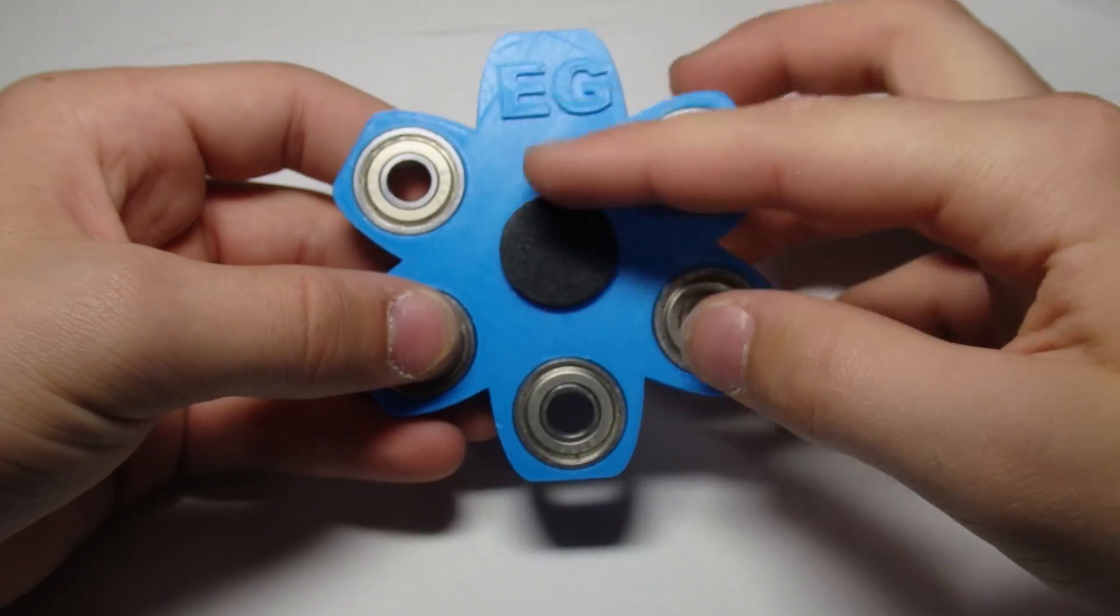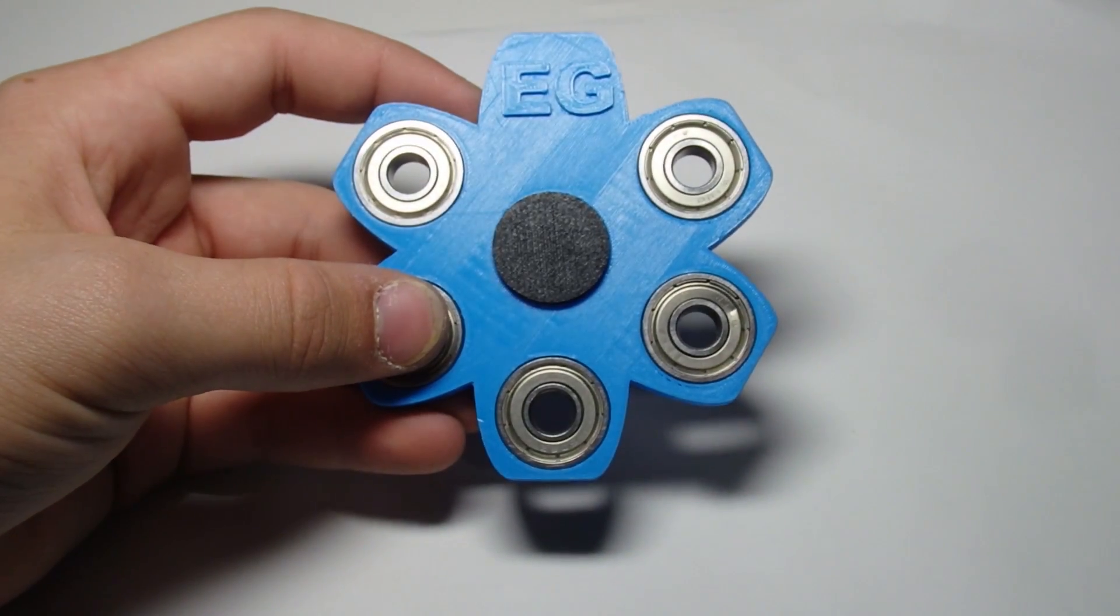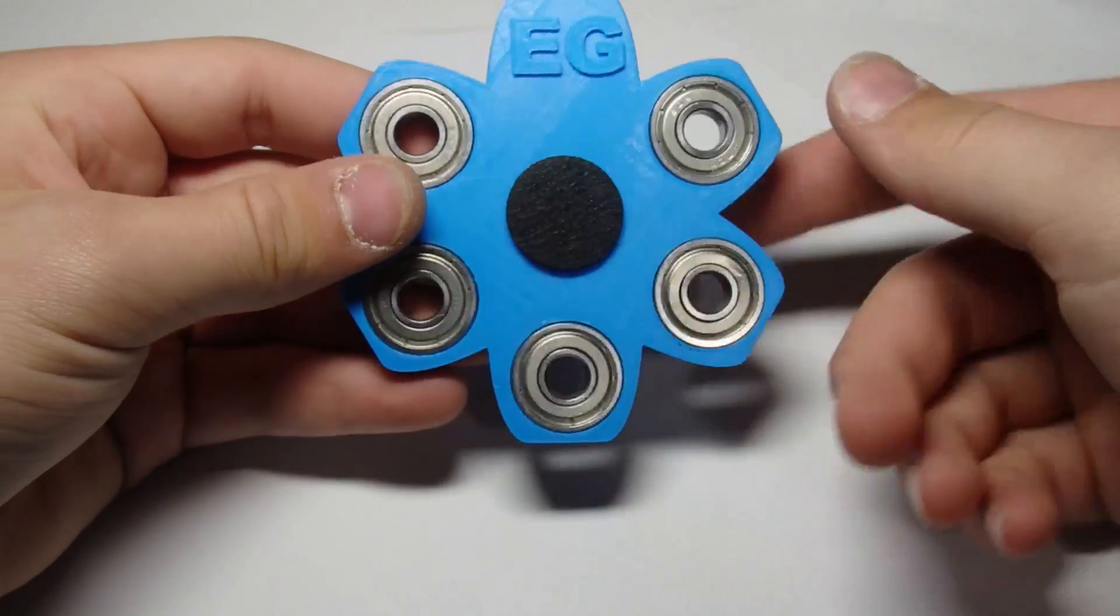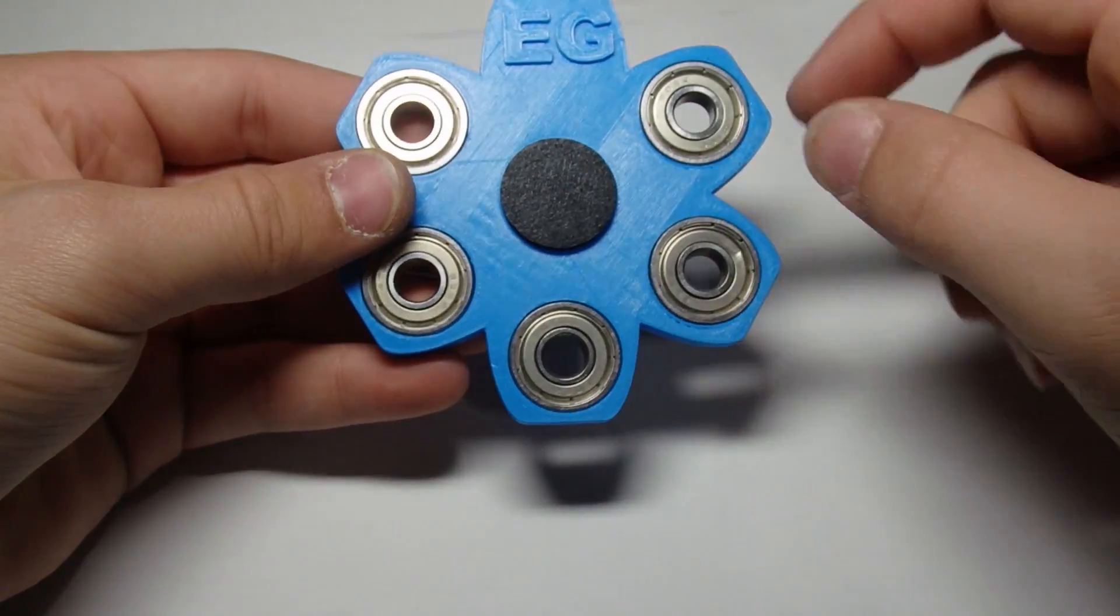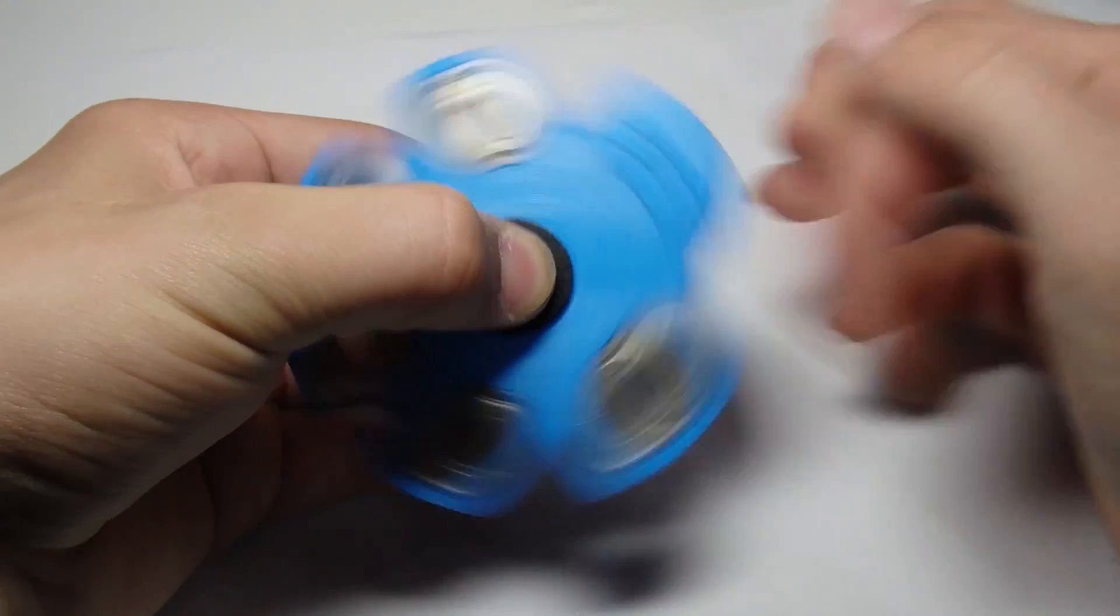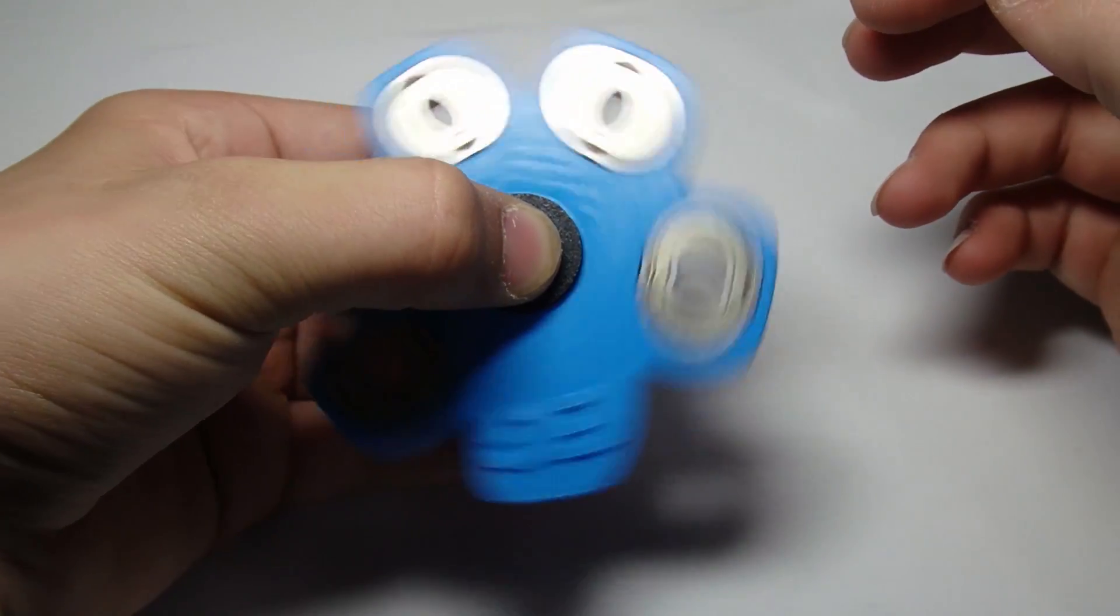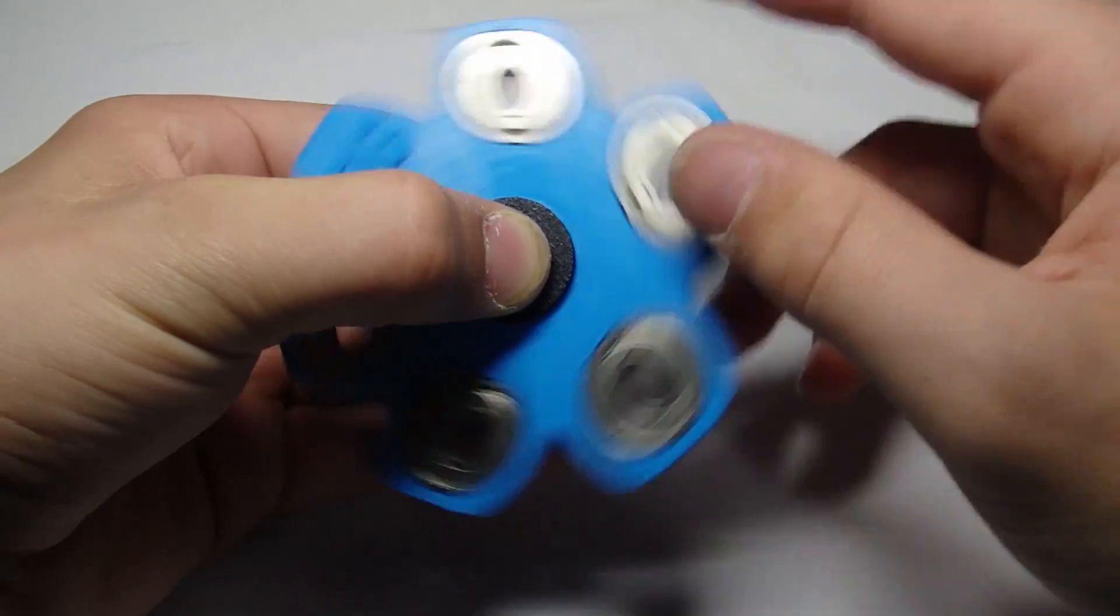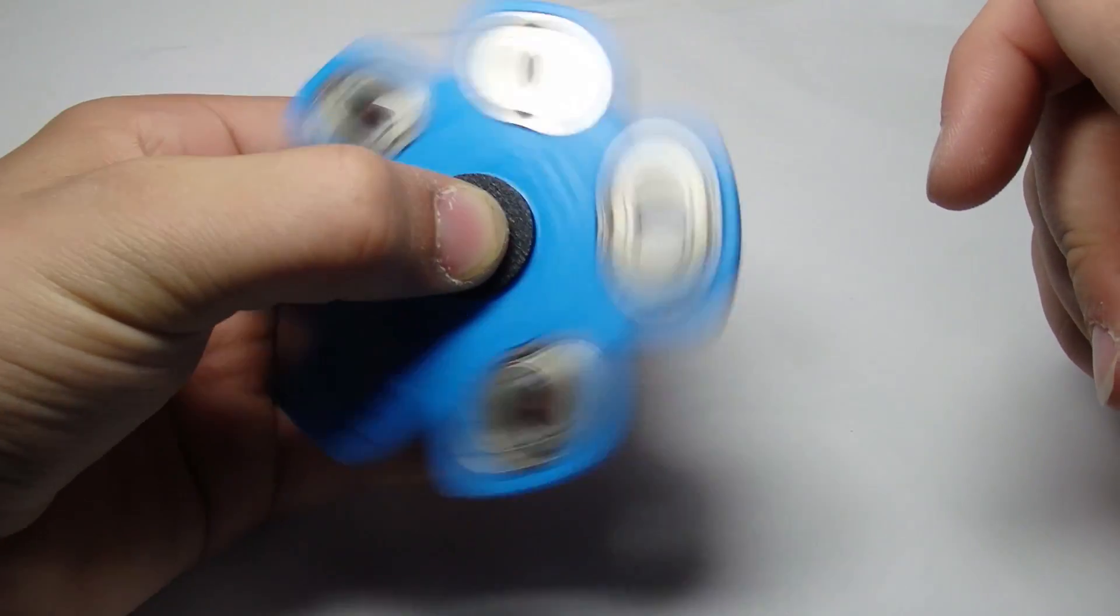This next one is called the wobble fidget spinner and it is just meant to wobble, just to produce a nice effect, because most of them you can't really feel them that well unless you kind of turn them a bit, but with this one you get a nice wobble. The spin doesn't last for that long because the wobble kind of slows it down, but it is still very satisfying and I think it turned out really well.